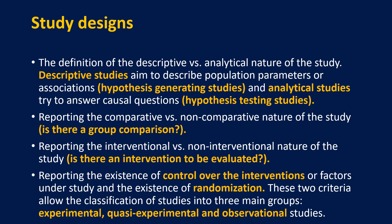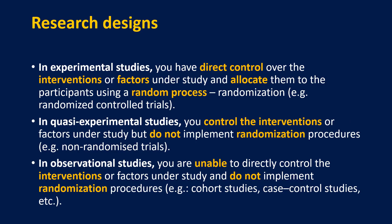A study that is experimental allows randomisation — these are really defined as the highest order of study. In experimental studies you have what we call direct control, both of the intervention and all the factors in that intervention, but also more importantly about the way you allocate the participants using randomisation. This is classically used in things like randomised control trials in medicine. In a quasi-experimental study, which was the example in the assignment, you control the intervention but do not implement randomisation. These are the non-randomised trials — where we might use matched pairs, blinded studies, or crossover designs. We haven't used randomisation to put people into those groups.